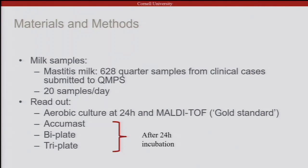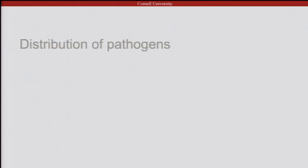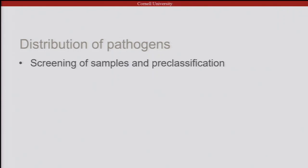Acumast, bi-plate, and tri-plate were read and recorded by trained and untrained readers, which I will soon explain. Based on what QMPS collected during the year 2017, and to understand why we arrived at 628 samples, we screened samples and pre-classified them to ensure a meaningful distribution of important mastitis pathogens.